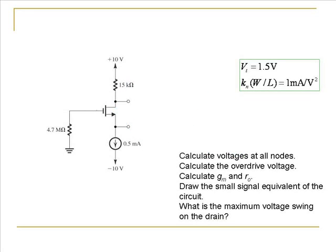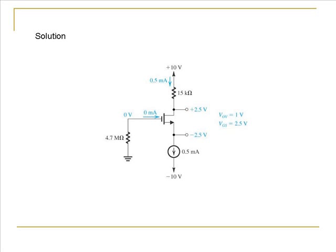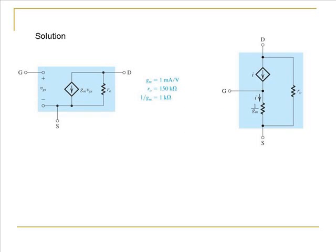As a practice, try looking at a problem where a MOSFET is again biased using a constant current source. The values of the resistors and constants are given. You are asked to calculate the voltages at all nodes, the overdrive voltage, the small signal parameters, and draw the small signal equivalent of the circuit, also finding the maximum voltage swing on the drain. The values of voltages at different nodes, the small signal equivalent, and the values of the small signal parameters are provided on the slides for you to check your answers.